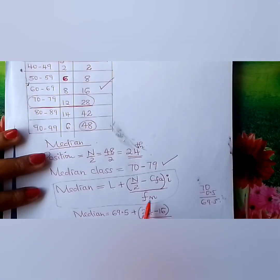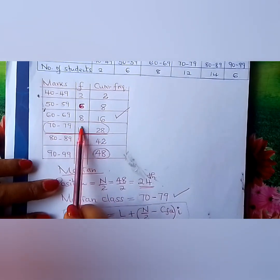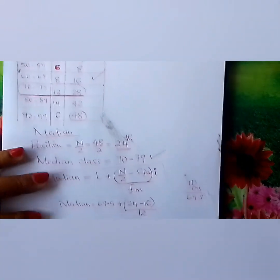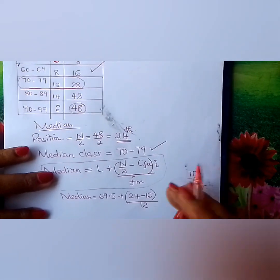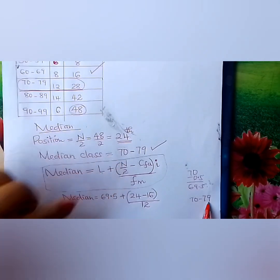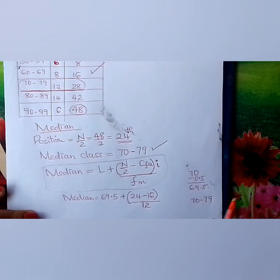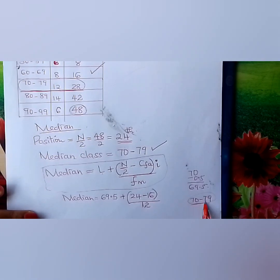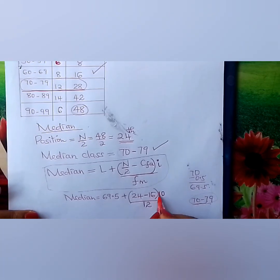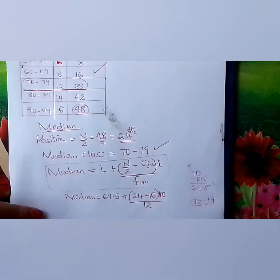Divided by the frequency of the median class, which is 12. Multiplied by I, the class interval. From 70 to 79 — counting 70, 71, 72... through 79 inclusive — you get 10 numbers. Some people confuse this and say 9, but it is 10.